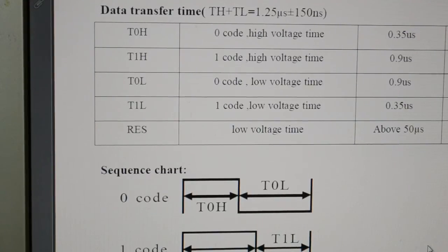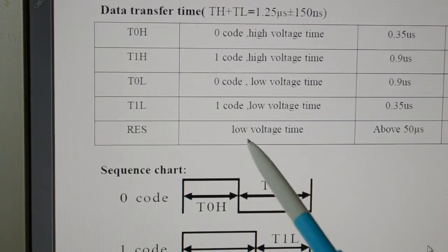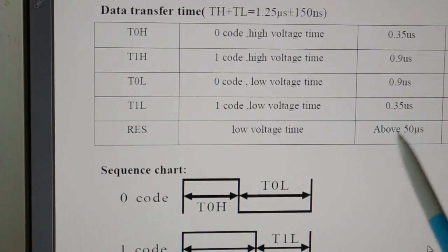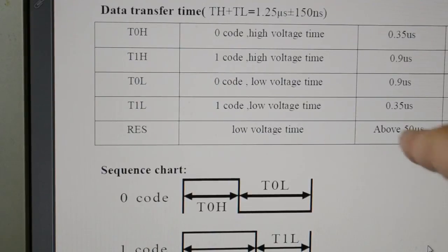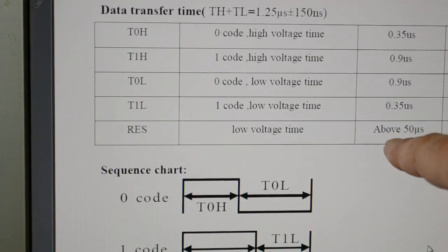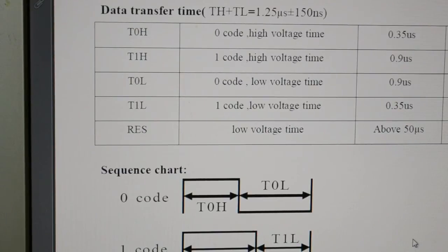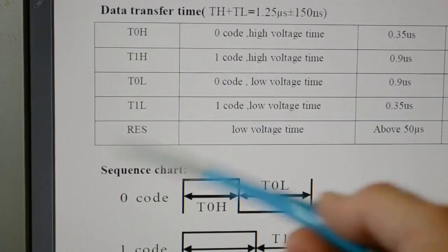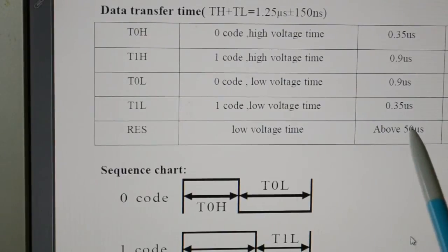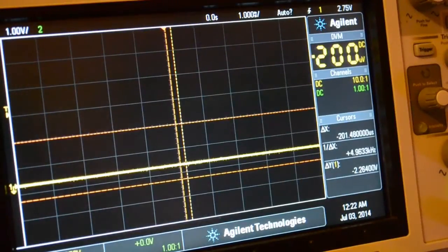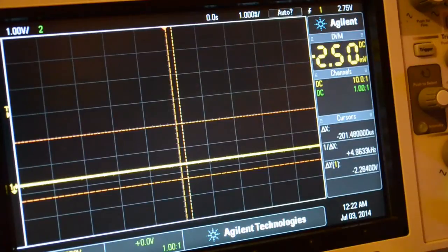The reset is actually quite easy — the reset time has to be above 50 microseconds, and most compilers can do a 50 microsecond delay. That will reset the registers so you can change the colour on the LED. Let me give you a quick look at the scope, and then those signals might make a bit more sense.